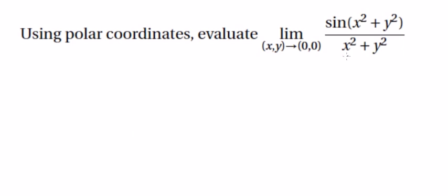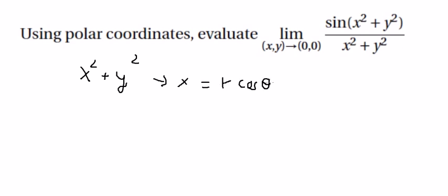We know that x squared plus y squared relates to the circle, so we can substitute x equal to R cosine theta and y equal to R sine theta, and we put this into the expression.